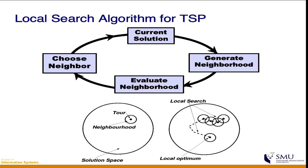From the best neighbor you then try to modify it again to improve further. Imagine the solution space where the tour is a dot and the neighborhood is a small circle around it — these are solutions similar enough to the starting one. Each move takes you to another solution in the search space, and you slowly move along until you find the local optimum. We call it local because it's only optimal within the local neighborhood, not necessarily the global optimum.